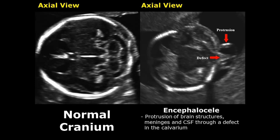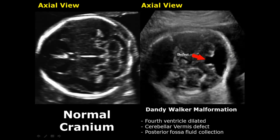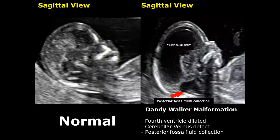When there is a protrusion of brain structures, meninges, and cerebrospinal fluid through a defect or hole in the calvarium, this condition is called encephalocele. This is the protrusion of brain tissue and meninges, and the defect must be present in this area. Dandy-Walker malformation is associated with the posterior fossa — there is a defect in the cerebellar vermis leading to fluid collection in that area, along with ventriculomegaly, as seen in this sagittal view.